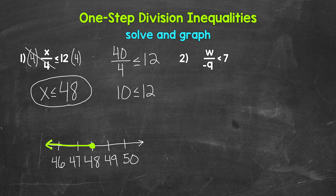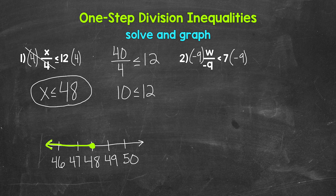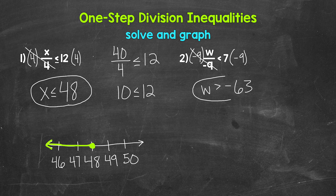Let's move on to number 2, where we have w divided by negative 9 is less than 7. We need to undo the division, so let's multiply the left side by negative 9. That means we need to multiply the right side by negative 9 as well. Remember, when we multiply or divide both sides of an inequality by a negative, the inequality symbol flips — it changes direction. On the left, the negative 9s cancel each other out. W is now isolated, the inequality symbol flips, and on the right, 7 times negative 9 gives us negative 63. So W is greater than negative 63.